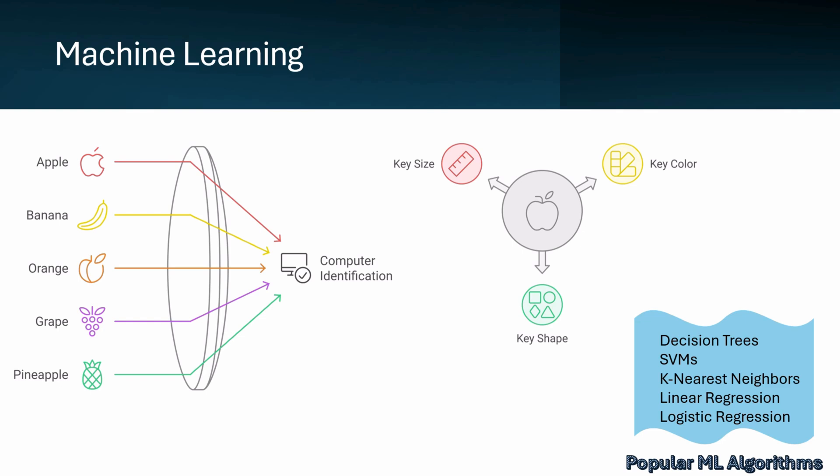However, traditional machine learning relies heavily on human intervention. For example, we might guide the algorithm to focus on specific features like color, shape, and size, which aid in fruit recognition. These hand-picked features are crucial as machine learning algorithms depend on predefined characteristics to interpret the data.